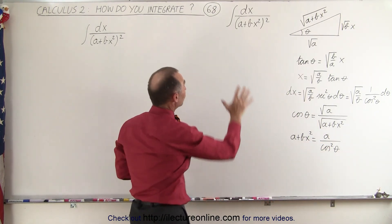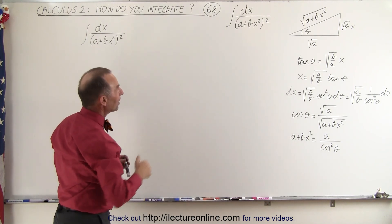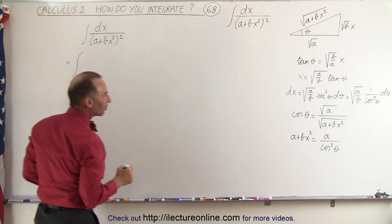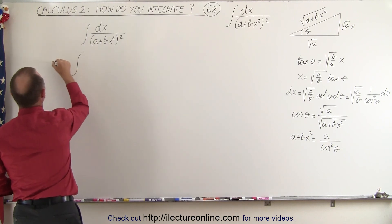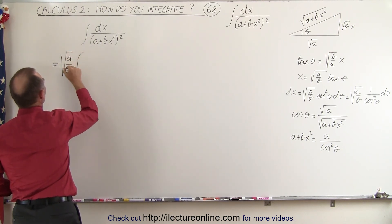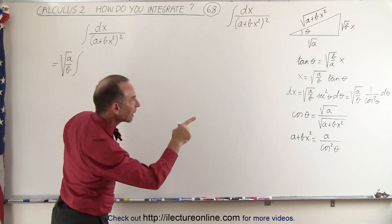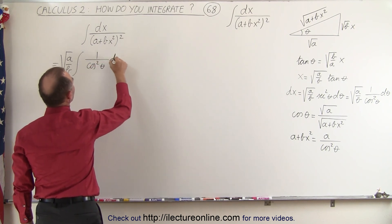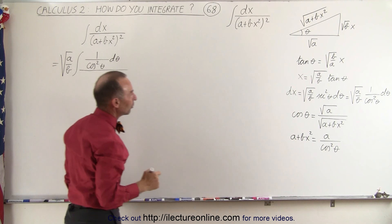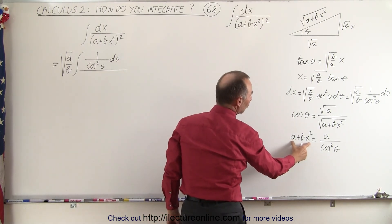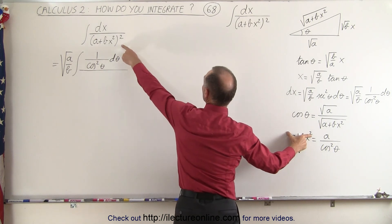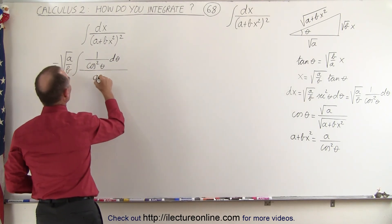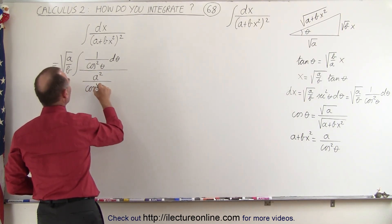We can now substitute into our integral the DX and the denominator. Instead of DX, we write the square root of A over B — and I can pull that outside the integral sign — times 1 over the cosine squared, theta D theta, divided by the denominator. Notice the denominator is A plus BX quantity squared, so we take that and square it, ending up with A squared divided by the cosine to the fourth power of theta.